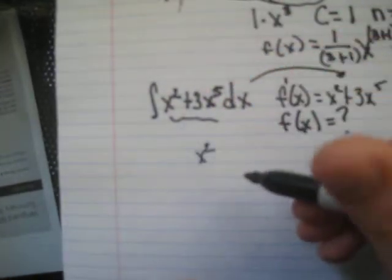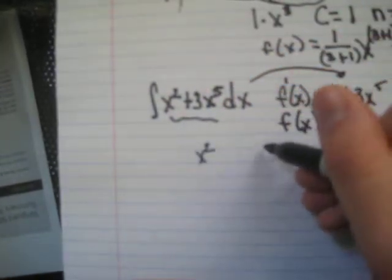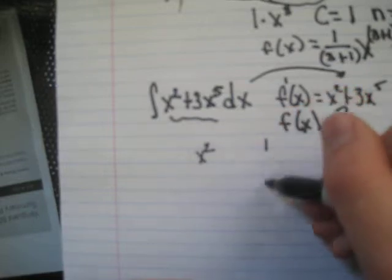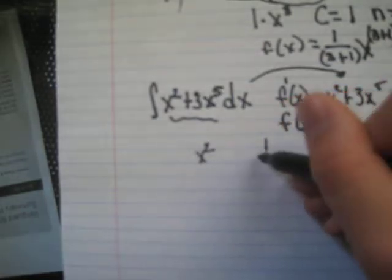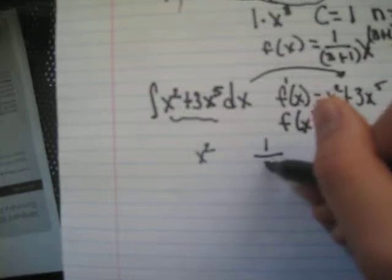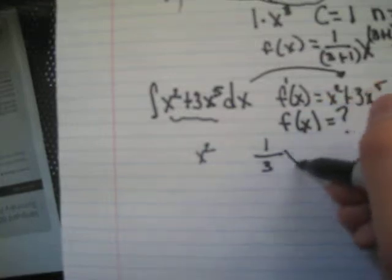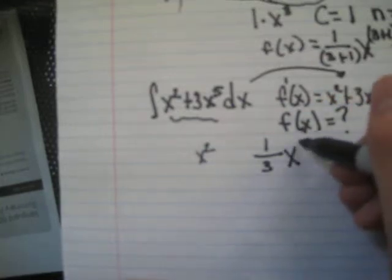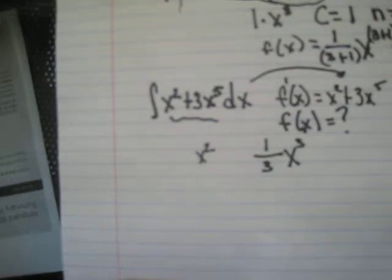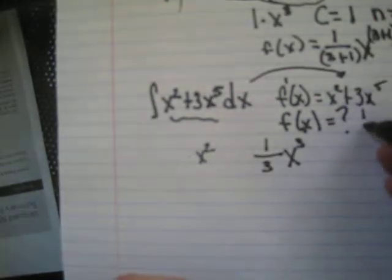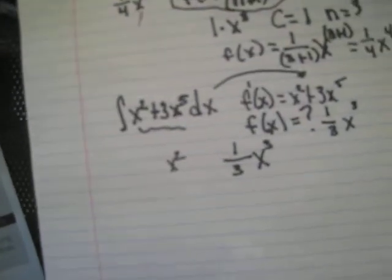So, if our derivative of the function is x squared, we take the coefficient, 1, and we divide it by the exponent plus 1, which is 3, x to the exponent plus 1 third. So that's our first term. So we already know the first term of our function, which is 1 third x cubed.